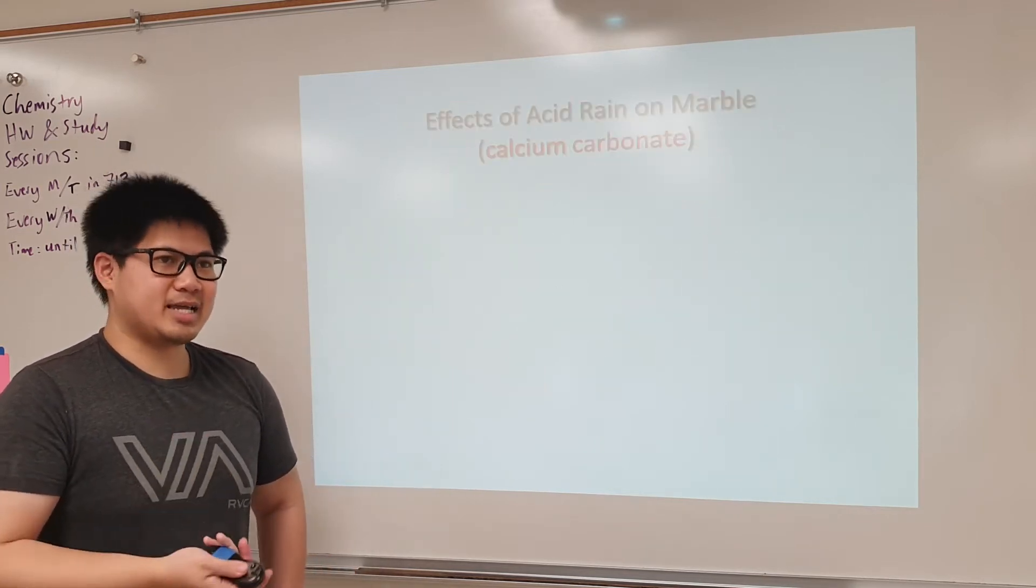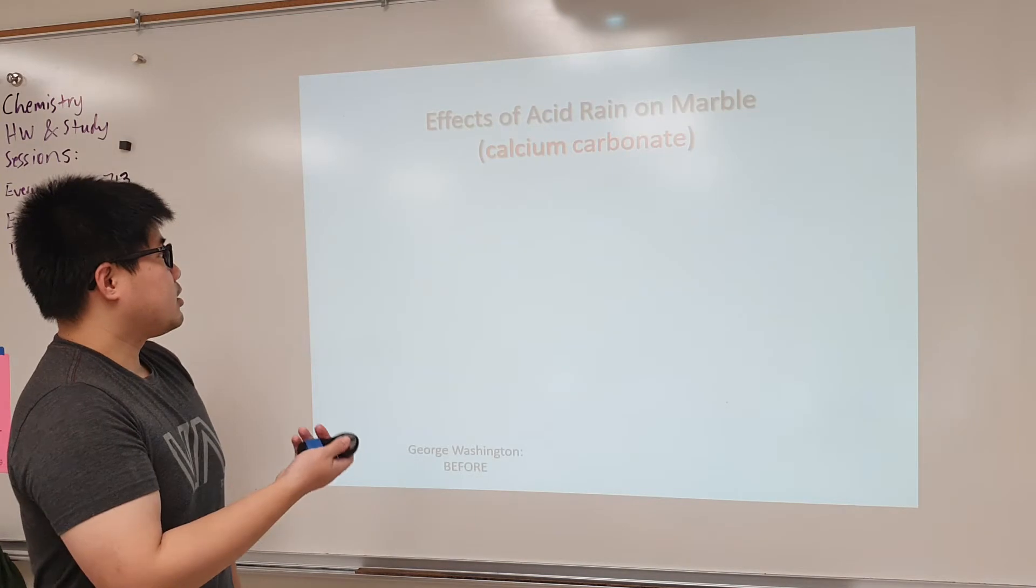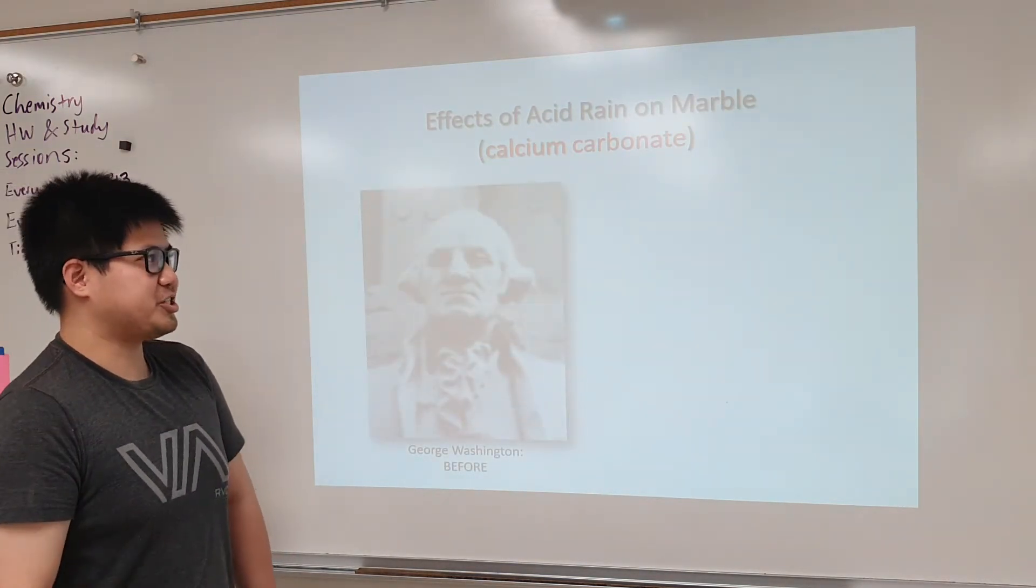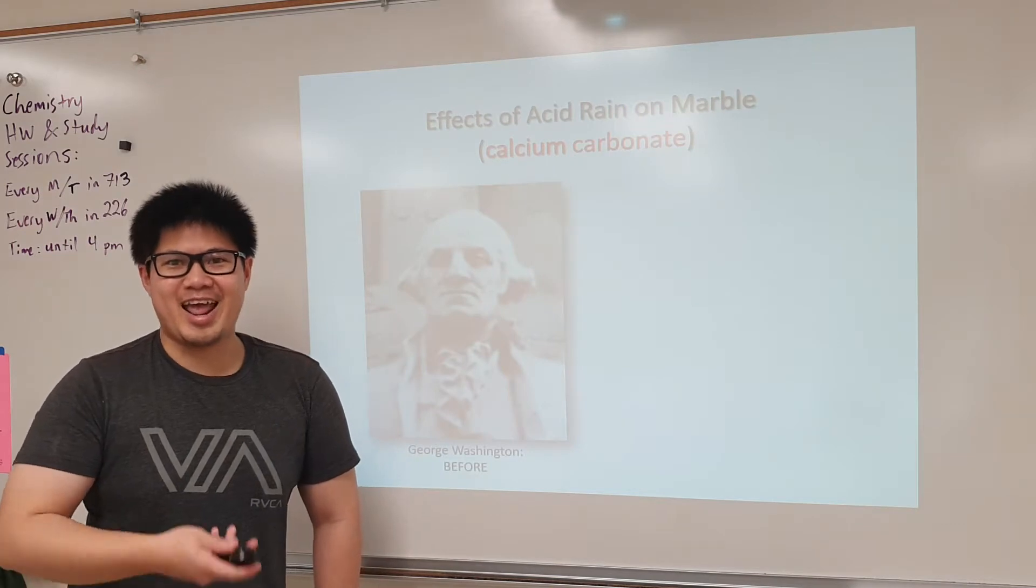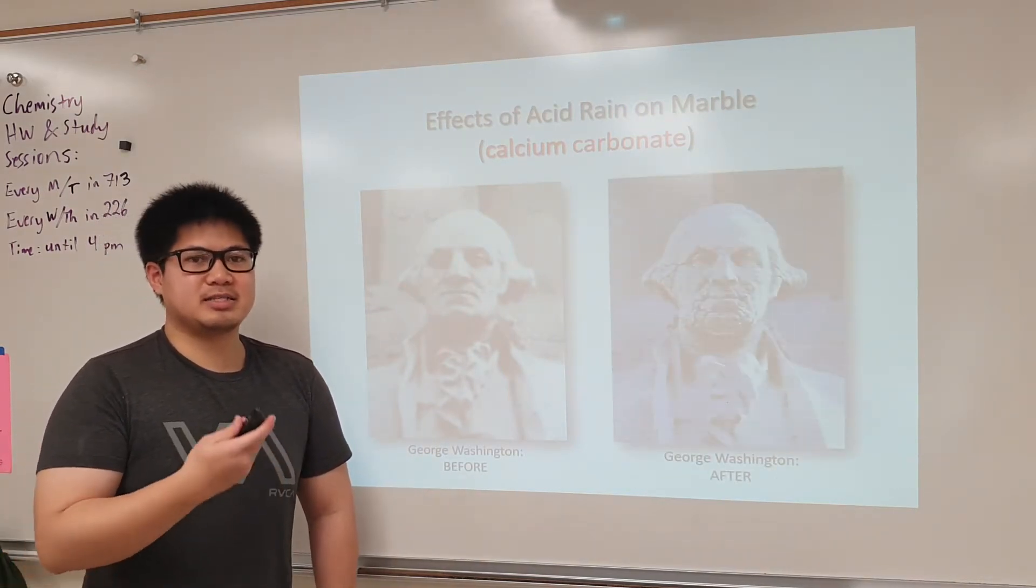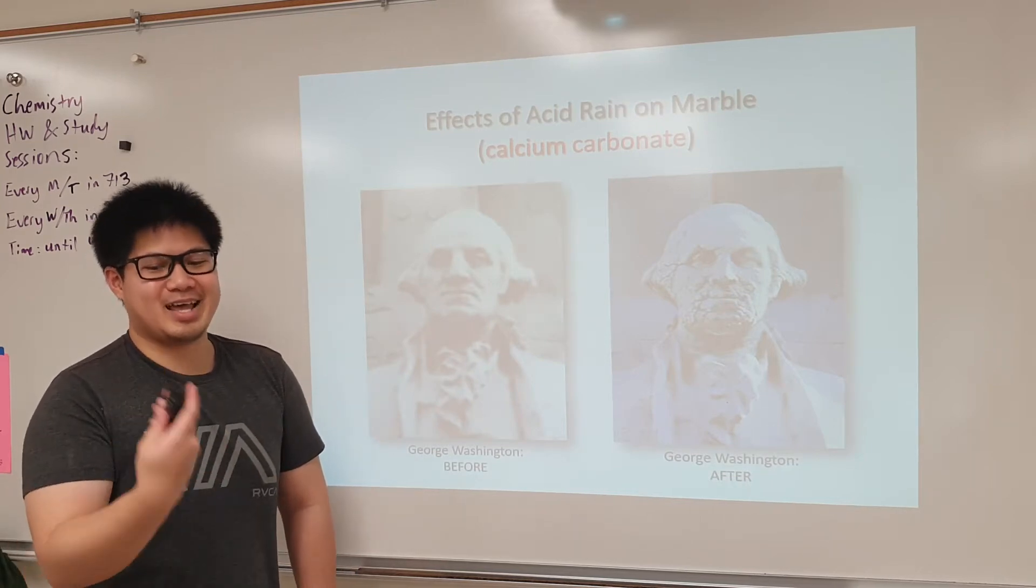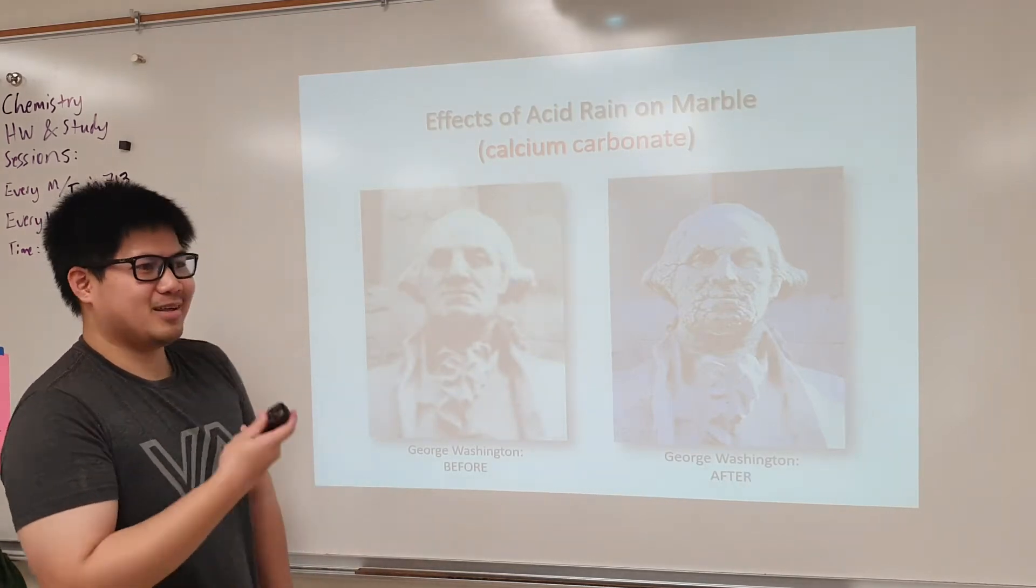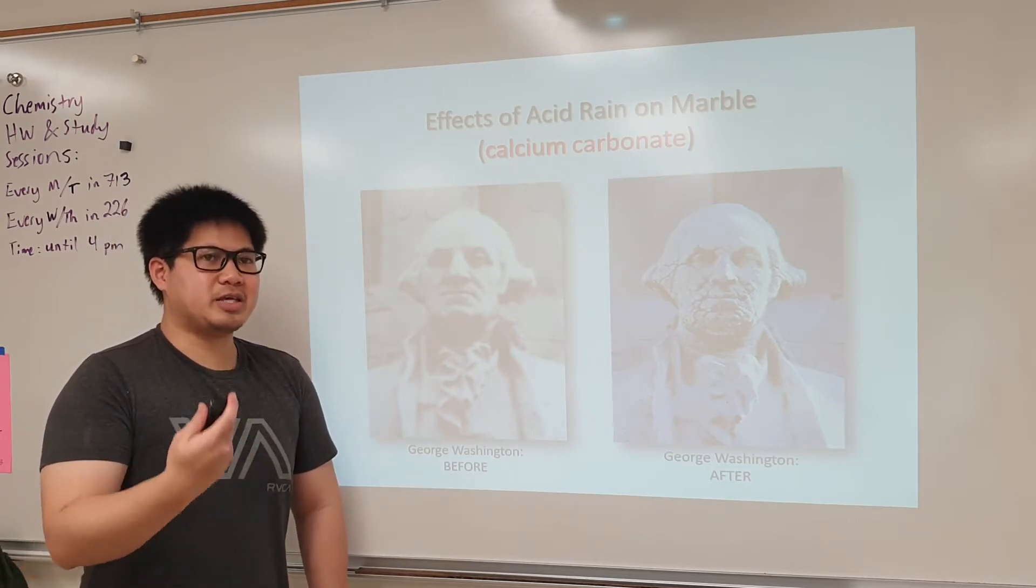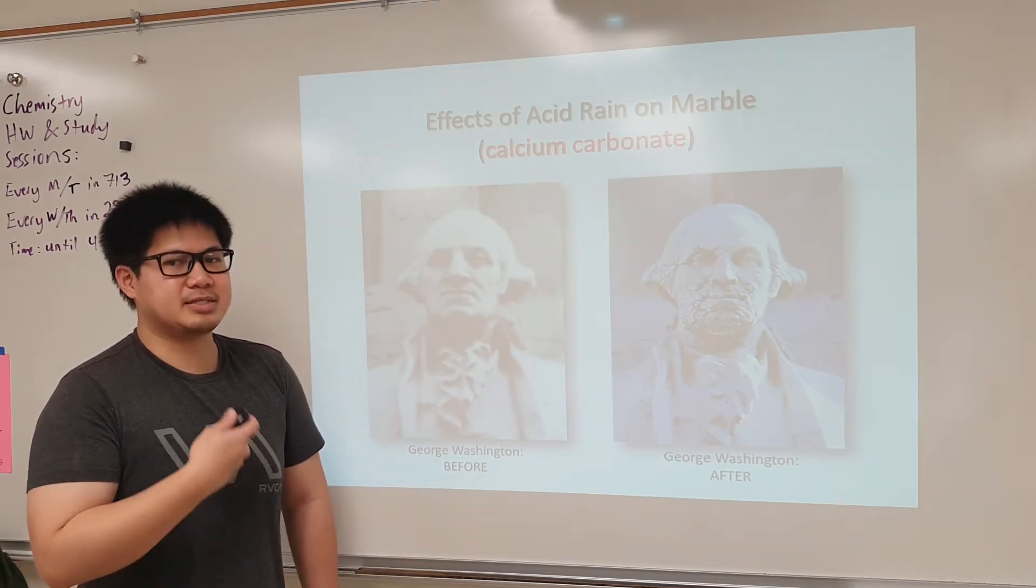Now let's take a look at an example. This is a picture of a statue of George Washington freshly made, and then this is the same statue after acid rain. What happened? A chemical reaction occurred. Let's take a look into the chemistry of how this happened.